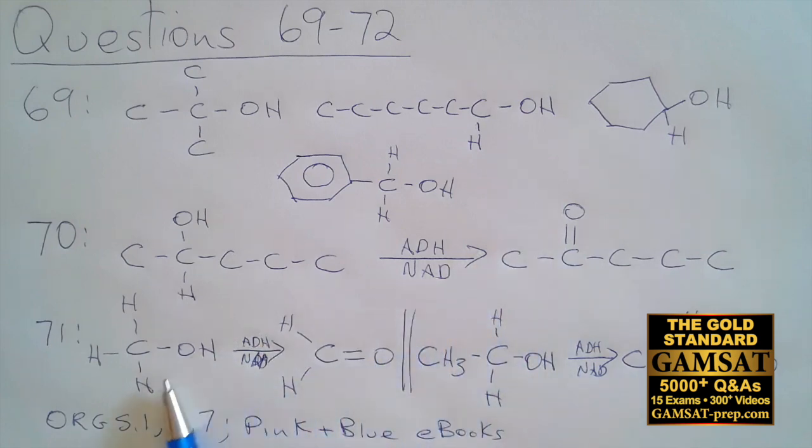Moving on to question 71. They bring up methanol and ethanol, specifically catalyzed by ADH in the presence of NAD. So we have both of them there, even though they didn't repeat it in Roman numerals I and II. They did say it clearly in the question stem that both were present. Here is methanol—methyl alcohol. We have the OH and a hydrogen available so that oxidation can take place, and we need to name this. This is formaldehyde.